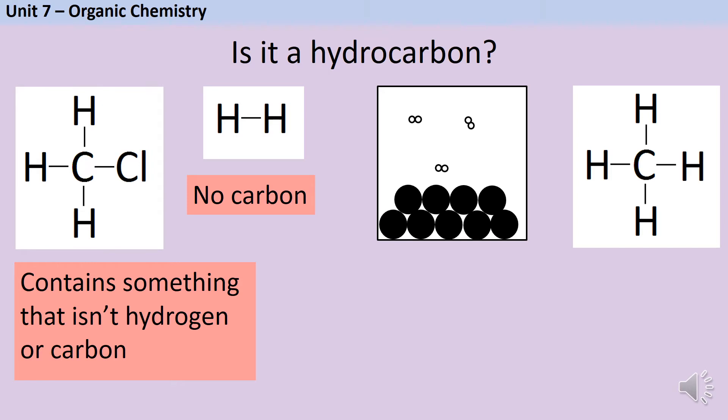Our third substance has carbon and hydrogen together in a box but they're not bonded together so it isn't a compound and therefore it's not a hydrocarbon either. Our final substance is methane and this is a hydrocarbon because yes it is a compound that only contains carbon and hydrogen.